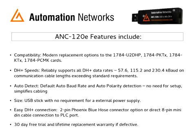Auto-detect features allow baud rate, DH+ node, and polarity of cables to be automatically configured, with no need for setup, simplifying cabling and configuration. The smallest converter on the market, available in handy USB stick format with no requirements for an external power supply. With two easy DH+ connections, including the 2-pin Phoenix Blue Hose connector option or direct 8-pin Mini-DIN cable connection to the PLC port on your SLC 504 or PLC5.